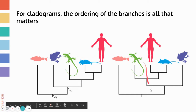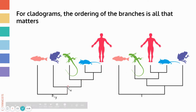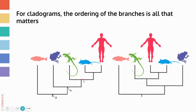In both trees, starting at the first node, the fish branches off from the common ancestor of all the rest of the organisms. The next branching point is where the frog splits off from the common ancestor of the human and mouse — that's the same in both trees. The next branch is the lizard splitting off from the common ancestor of the mammals. And the ordering of the most closely related species — mouse and human — doesn't matter; which is on the left or right is irrelevant.